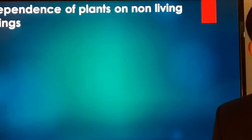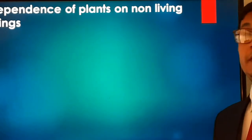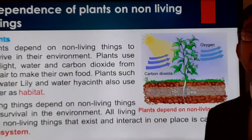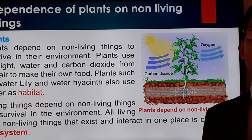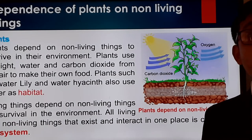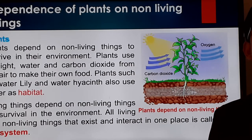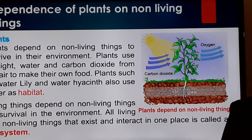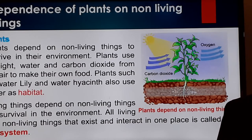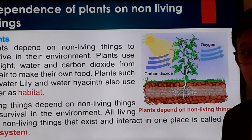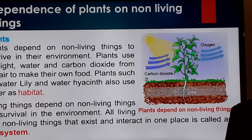Now let's look at the dependence of plants on non-living things. In this picture you can see the concept of photosynthesis. 'Photo' means light and 'synthesis' means food production, so photosynthesis is when a plant produces food with the help of light. The plant is a living thing that depends on sunlight, air, water, and carbon dioxide — all of which are non-living things.